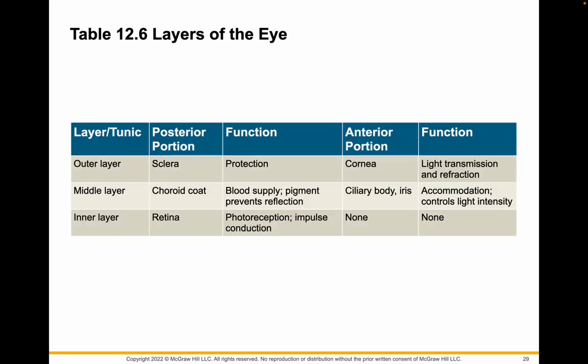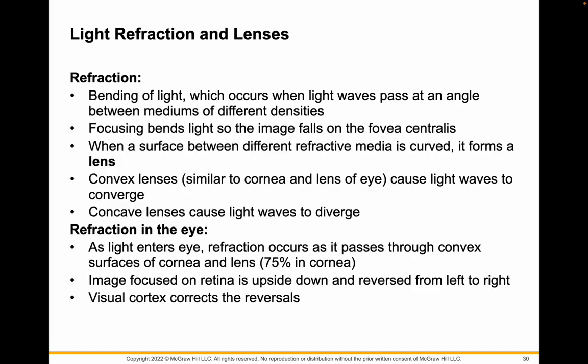Here are the layers of the eye — the posterior portion and what they do, and the anterior portion and what they do. Refraction is just the bending of light, and the lens helps do this. A convex lens, like our cornea or the lens of our eye, causes light waves to converge. A concave lens causes light waves to diverge.